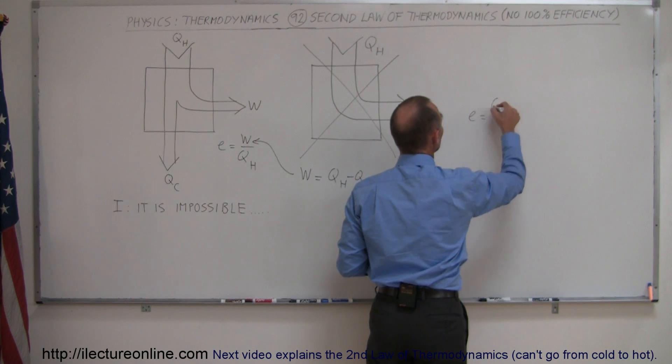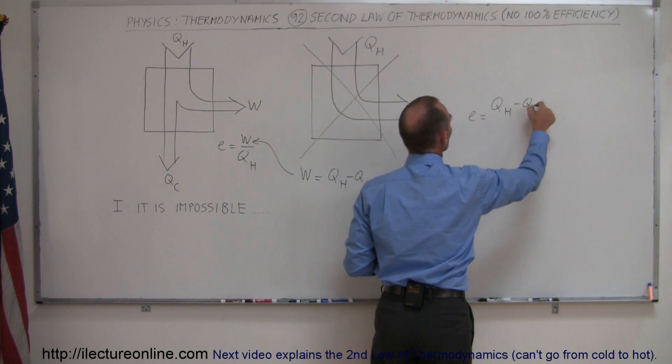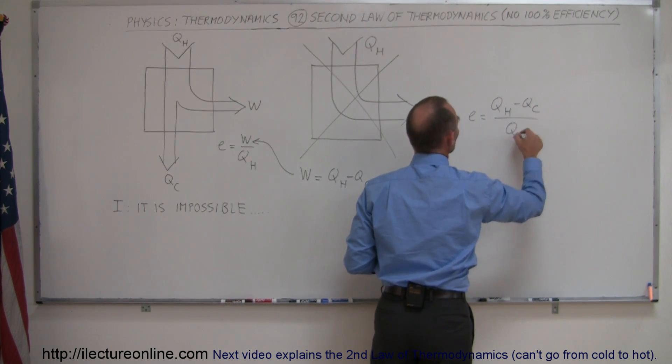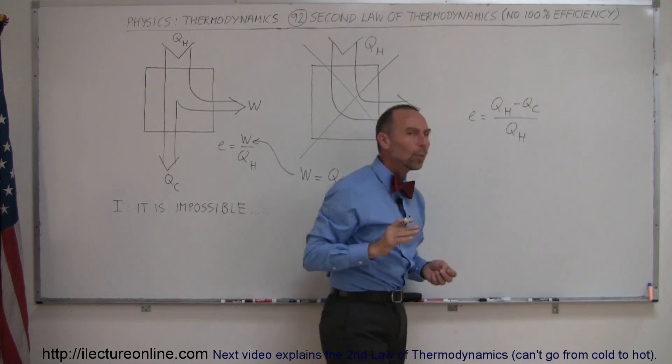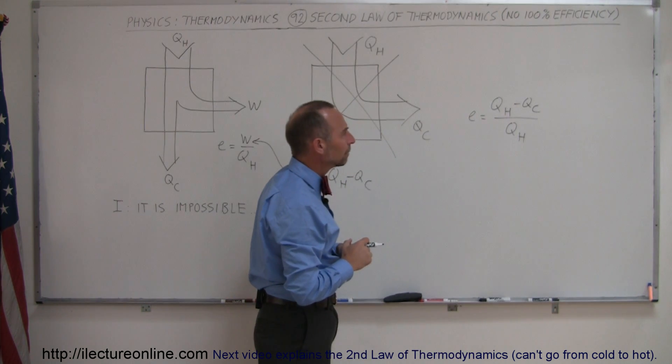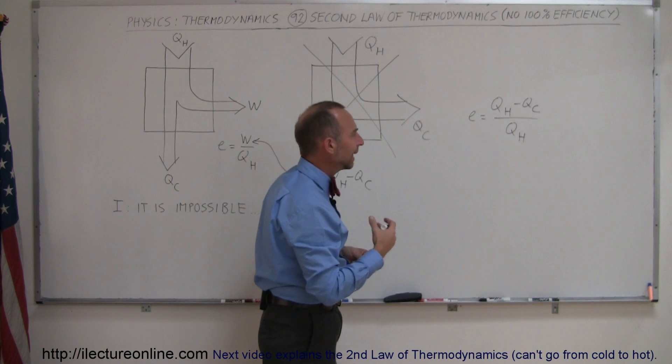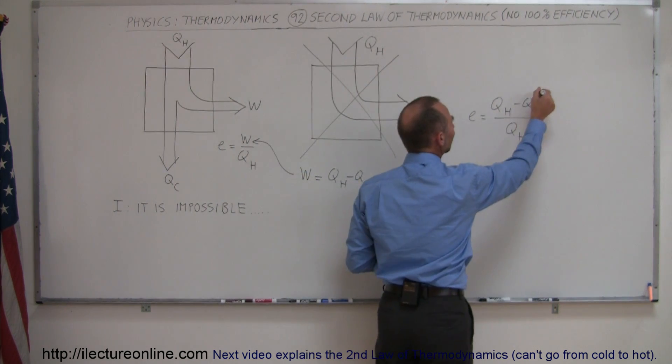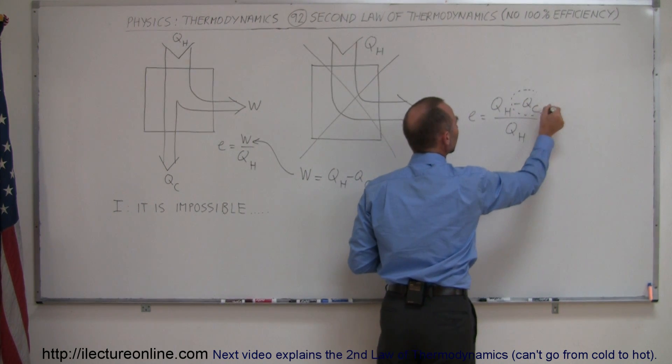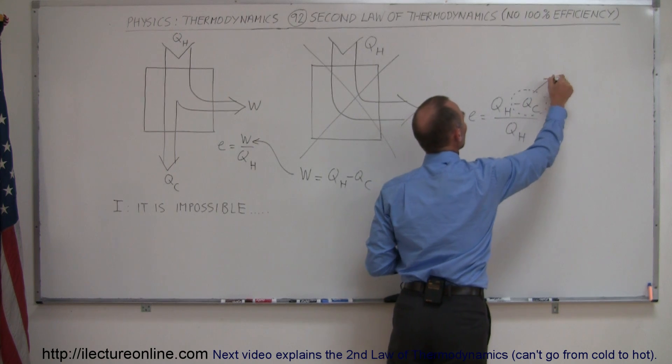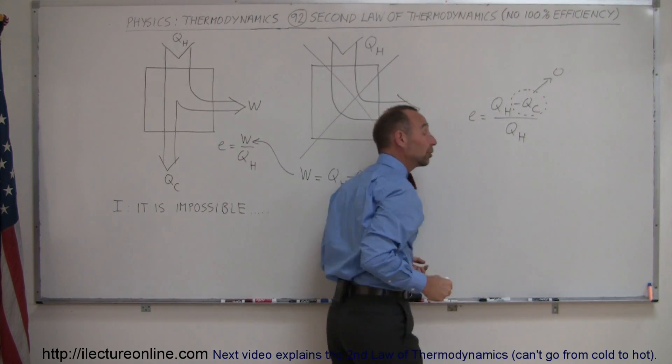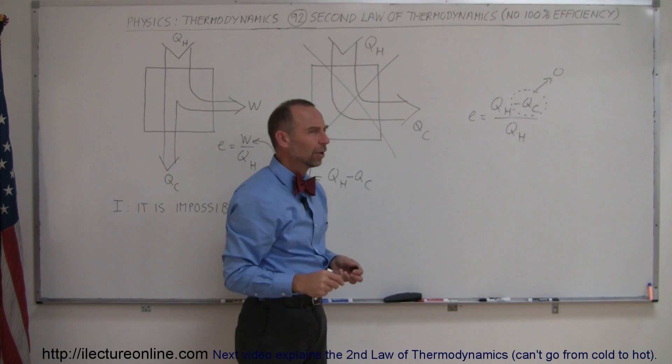We get the efficiency is equal to the difference, Q hot minus Q cold divided by Q hot. And then the only way in which we can get 100% efficiency is if this portion of that equation goes to zero. If this goes to zero, then we have efficiency of Q hot divided by Q hot, and that would be 100%.